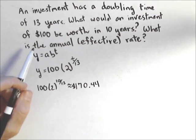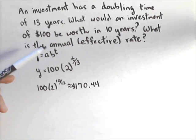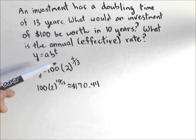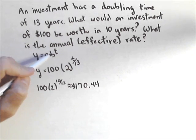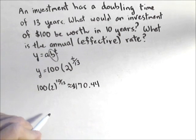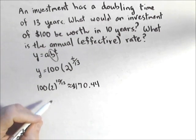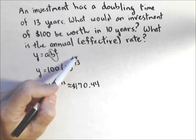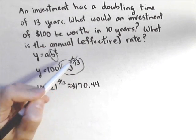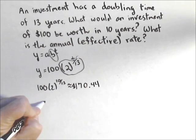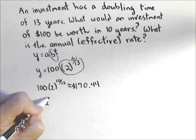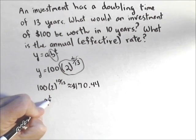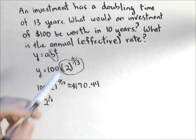The annual yield, or effective yield, or the annual rate, is what percentage we're gaining each year. To find that, what you need is the base of your exponential. The base is what's being raised to the exponent, so for us, it's actually that 2 to the 1 over 13. It's not just the 2, because it's not doubling every year. It's 2 to the 1 over 13, so basically we just remove the T.